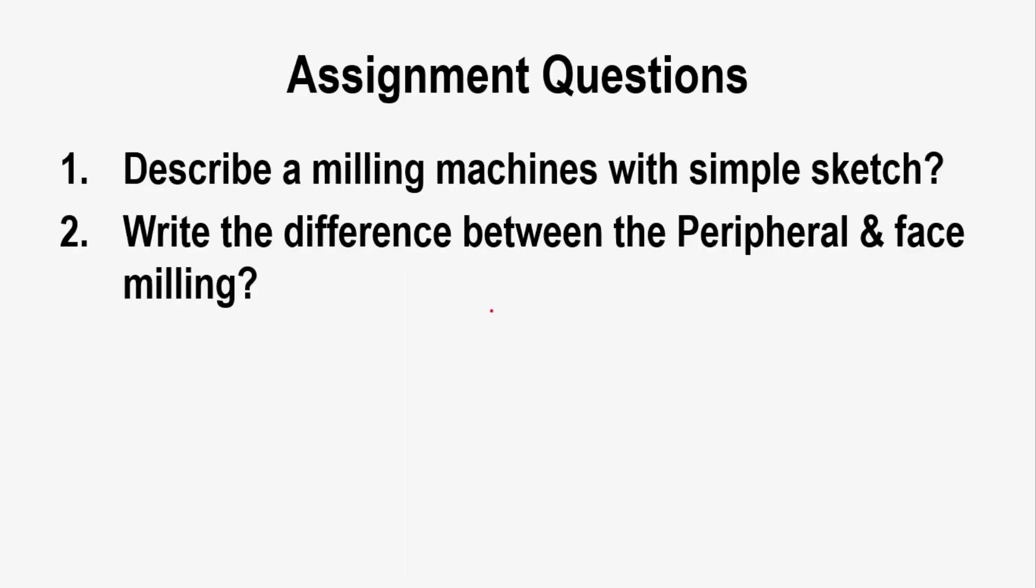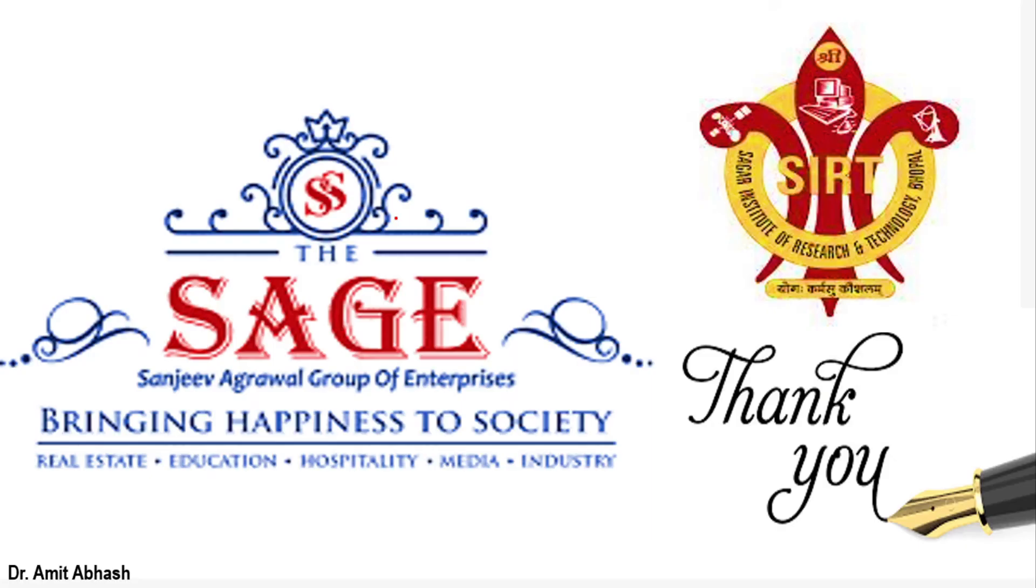Assignment questions that you need to solve. The first question is describe a milling machine with simple sketch. As I told you, main components you should mention and draw it using a neat sketch. Second is what is the difference between peripheral milling and face milling. These two questions you need to solve. Thank you for watching this video and thank you on behalf of the Sage Group and the Department of Mechanical Engineering, SIRT. Thank you.